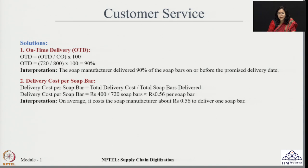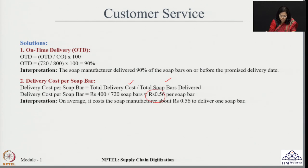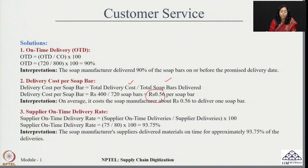The second KPI is delivery cost per soap bar — an important KPI for comparing different options. This is calculated as total delivery cost divided by total soap bars delivered. For the given case, this is coming around rupees 0.56 per soap bar. This means the shipping fee is 0.56 rupees for every soap bar, taking care of the cost involved in transporting goods to the client, enabling easy comparison across different logistics options.